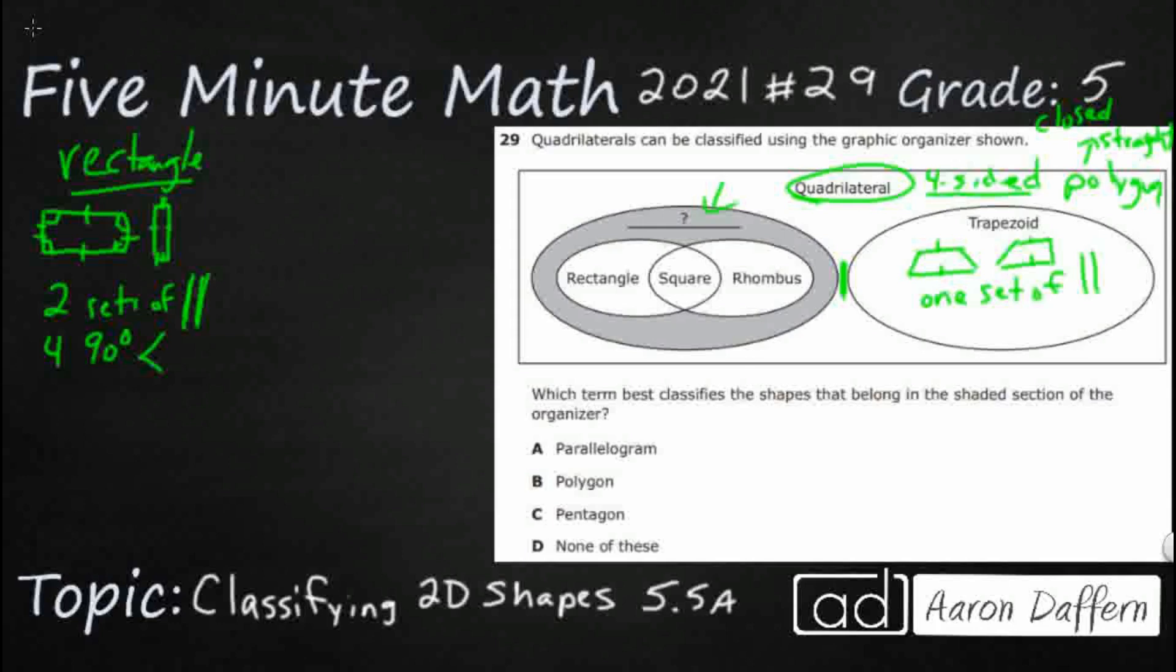And then we've got a rhombus right here. So a rhombus kind of looks like—sometimes we'll call it a diamond. It's not really a diamond, that's not really a shape. But it kind of looks like this. It also has these parallel lines, right? So we've got two sets of parallel lines. You notice that's important.